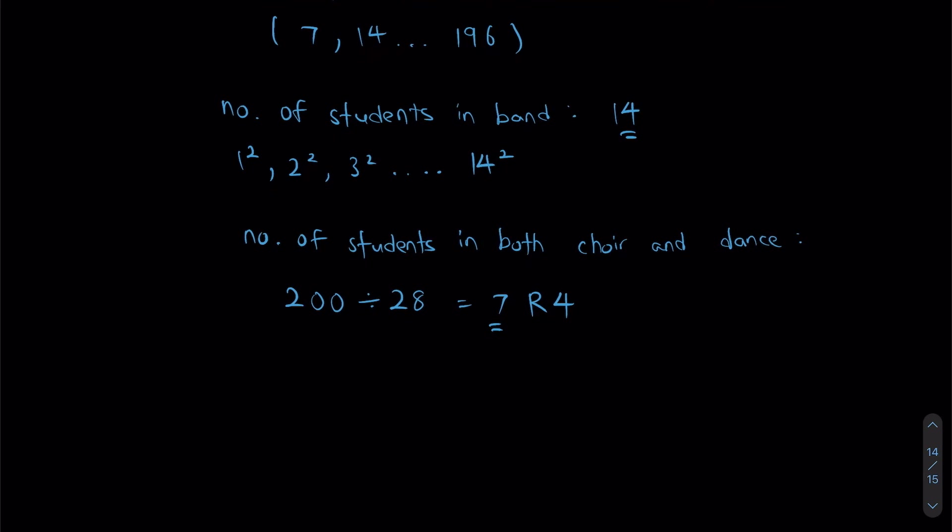Now, I'm going to do the same thing. I'm going to find the overlap between number of students in both choir as well as band. So, here are the conditions. It has to be a square number and it has to be a multiple of 4. I'm going to start listing those numbers for you. They're actually 4, 16. So, this is 2 square. This is 4 square. 36, which is 6 square. 64, which is 8 square. 100, which is 10 square. 144, which is 12 square. And finally, 196, which is 14 square. So, as you can see, I have 7 students who are both in choir and band.